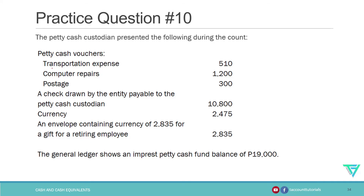There are petty cash vouchers for transportation expense, computer repairs, and postage. There's also a check drawn by the entity payable to the petty cash custodian — that is the replenishment check. There is currency of 2,475 pesos and an envelope containing currency representing contributions of employees for a retiring employee amounting to 2,835. The petty cash accountability includes the petty cash balance of 19,000 and the one petty cash impurity — the envelope containing currency for the retiring employee.